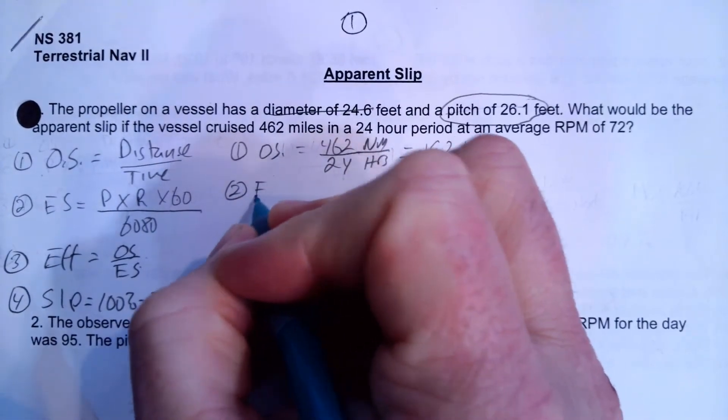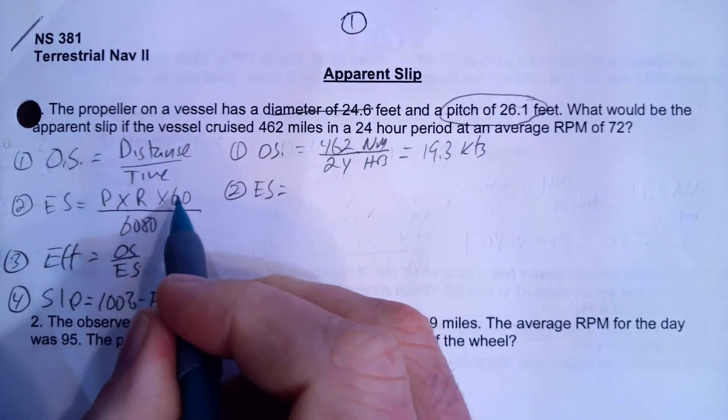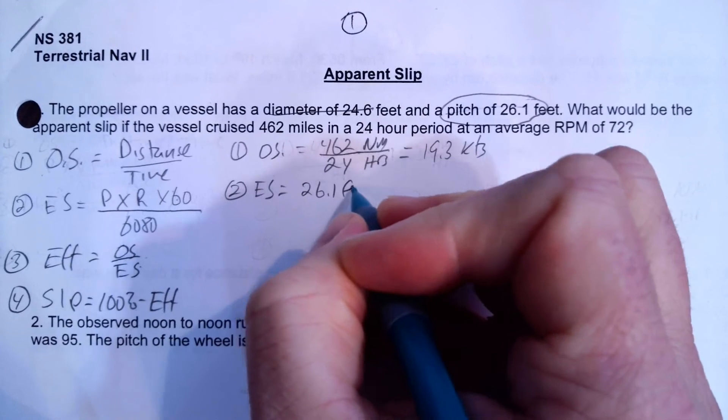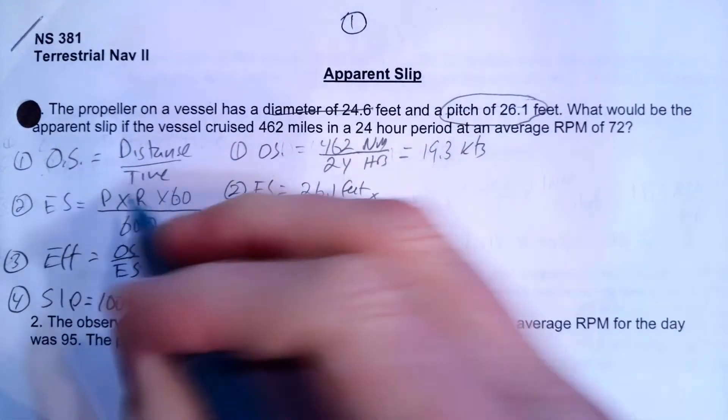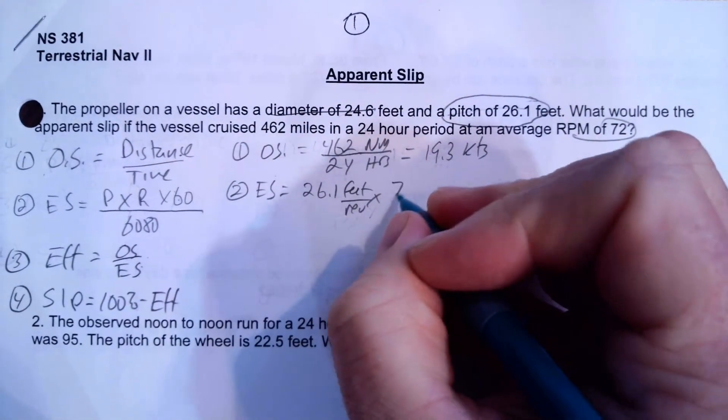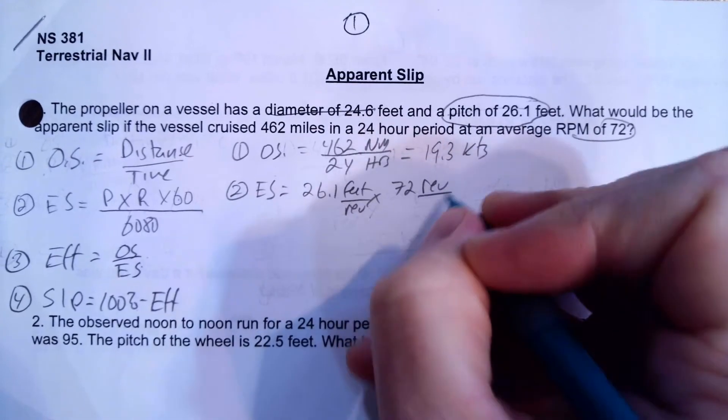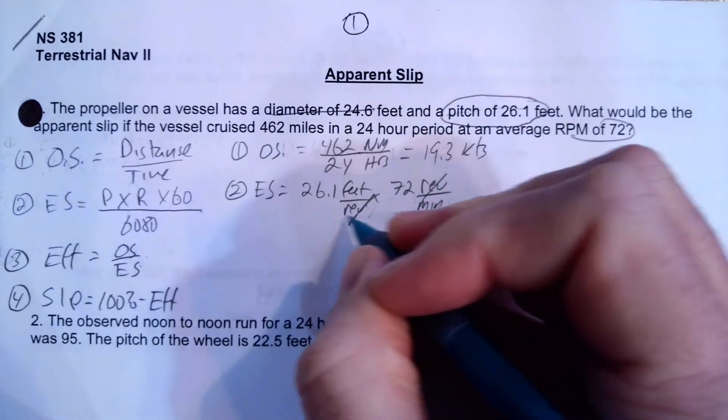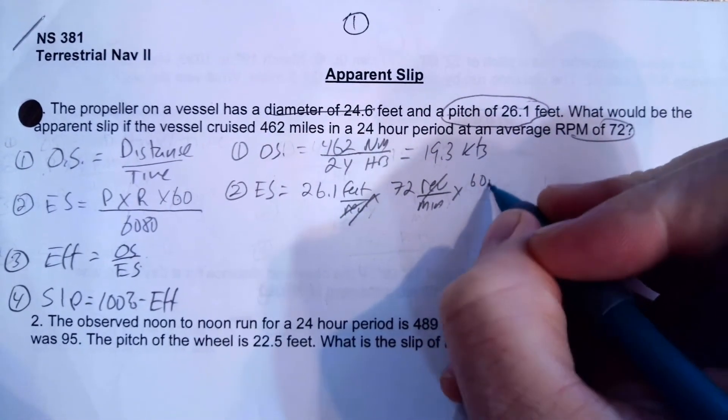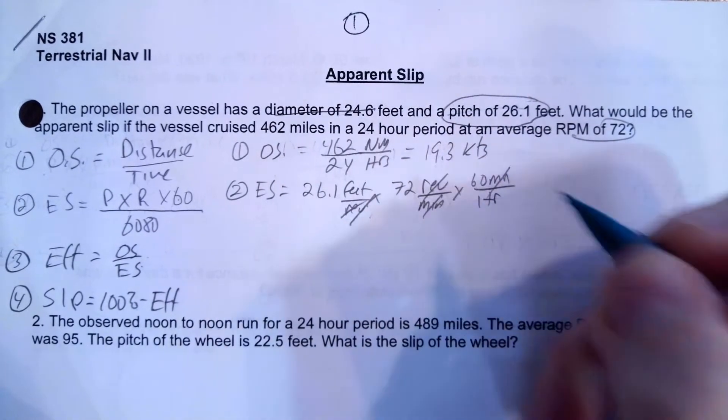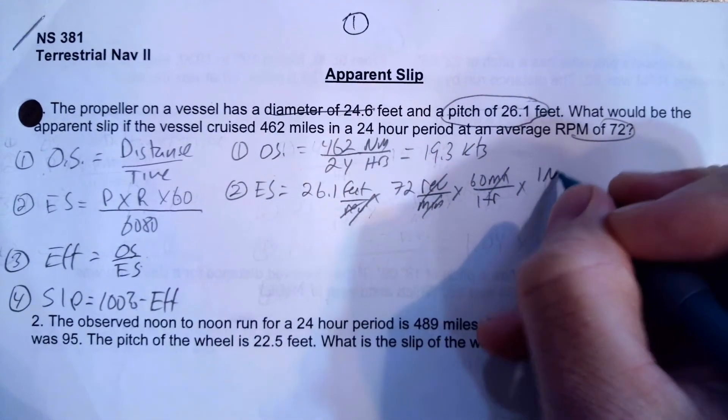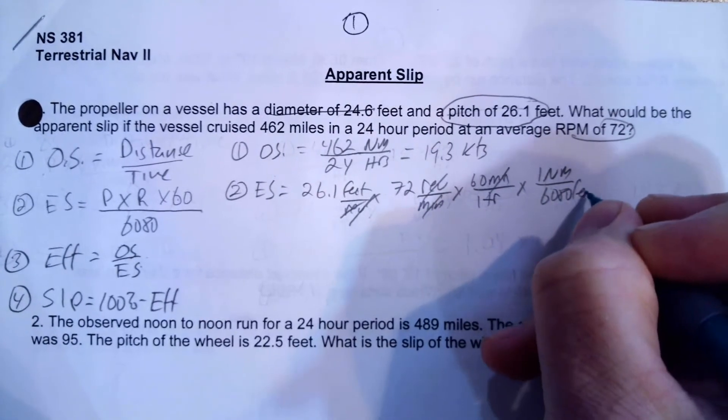Now let's calculate the engine speed. So the engine speed is going to be the pitch times the RPM. So I'm going to write these things fully out. So the pitch is 26.1 feet per revolution times the RPM, which they give us, the RPM was 72. So 72 revolutions per minute, the revolutions are going to cancel out right there. Now I need my conversion factor because I got to go from minutes to hours. So I'm going to multiply it by 60 minutes per hour. So the minutes go away and I need to go from feet to nautical miles times one nautical mile for every 6080 feet.